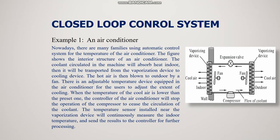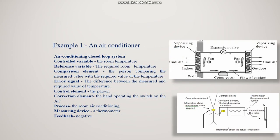An example of a closed loop control system is an air conditioner with a temperature sensor. Many families use automatic temperature control for air conditioners, and in malls, centralized air conditioning systems are controlled using sensors. If a temperature sensor is used to control the air conditioner, it is called a closed loop air conditioning system. A human identifies the temperature from the sensor and uses a remote or switch to increase or decrease the load on the air conditioner to get the desired cooling effect.